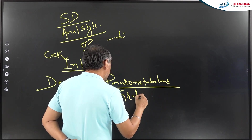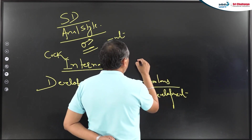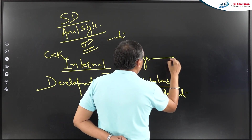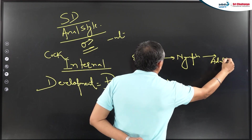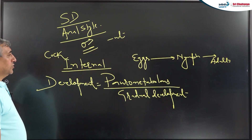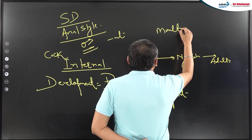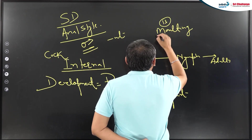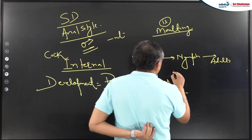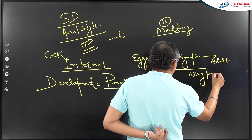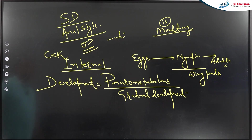Paurometabolous means gradual development: egg → nymph → adult. There are 13 moltings in the cockroach. In the 12th nymphal stage, there is development of wing pads, but actual wings are present only in adults.